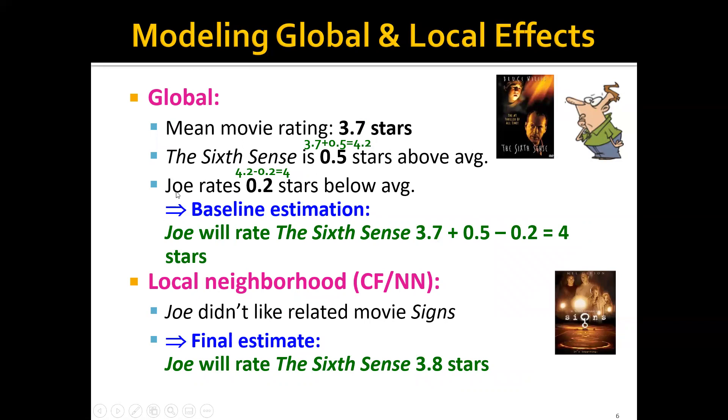And Joe, this person, is very critical. His average rating is actually 0.2 stars below the average. So until now, we will just subtract, so this gives us a baseline estimation of 4 stars here. To repeat, the baseline estimation for Joe is 3.7 plus 0.5, which is the bias for this movie, minus 0.2, which is the bias for this specific user. This gives us a baseline estimate of 4 stars for this user, Joe.